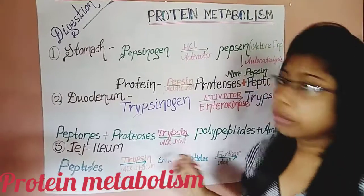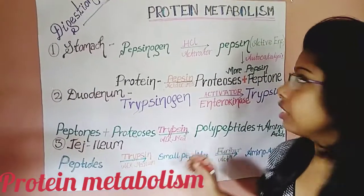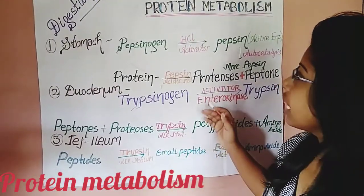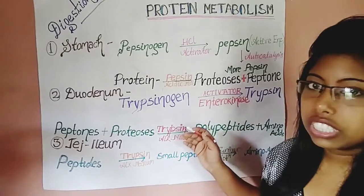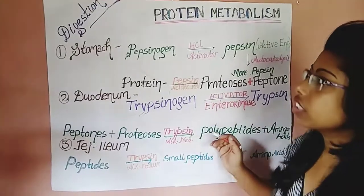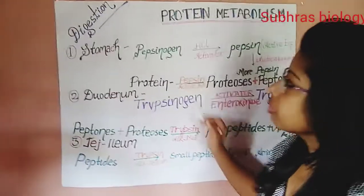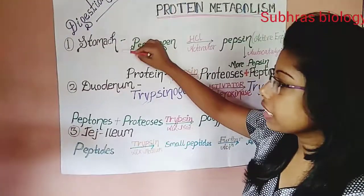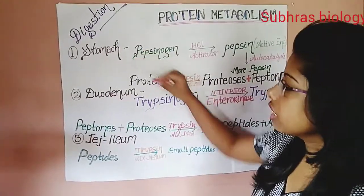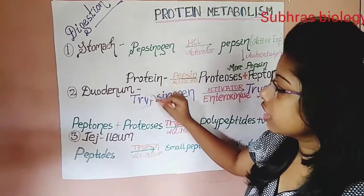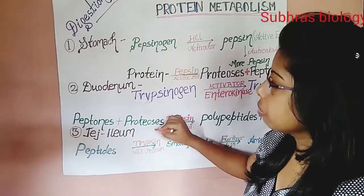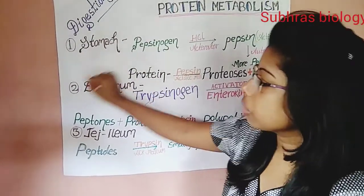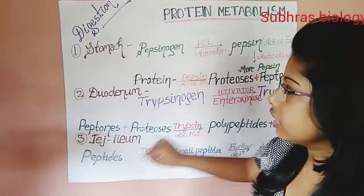Today we will go over protein metabolism, or the digestion of protein in the human body. First, we will see the digestion in the stomach, and next we will see the duodenum and the ileum, which is part of the small intestine.